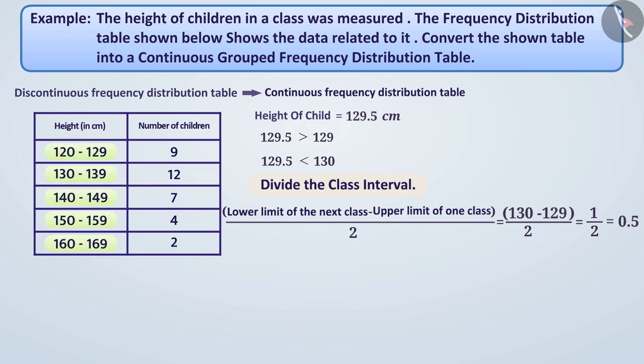Now, we will subtract 0.5 from the lower limit of each class, such as 120 minus 0.5 is equal to 119.5. Similarly, we will add 0.5 to the upper limit of each class, like 129 plus 0.5 is equal to 129.5. In this way, we will create a new class interval, 119.5 to 129.5.